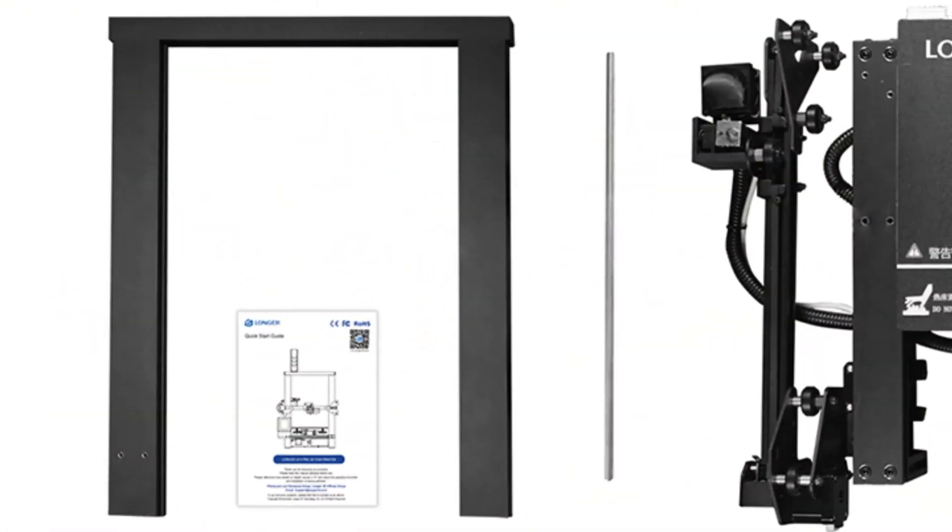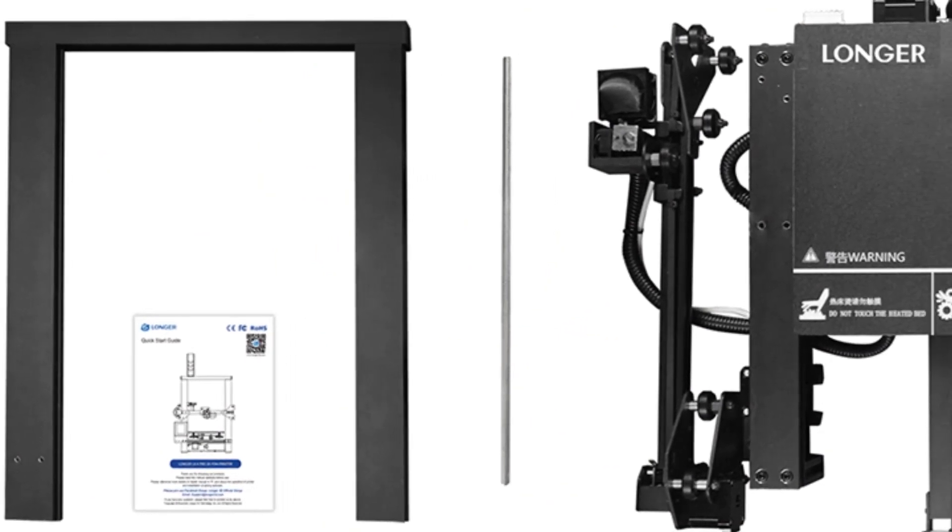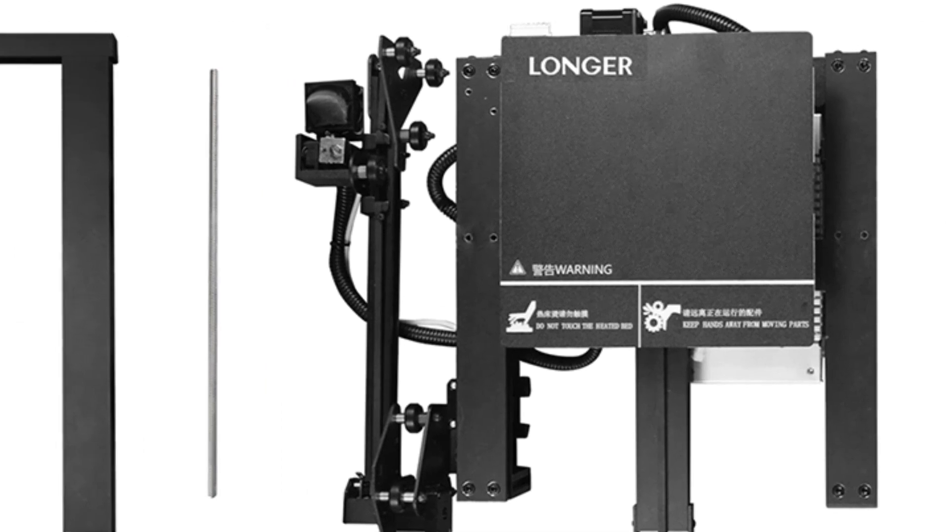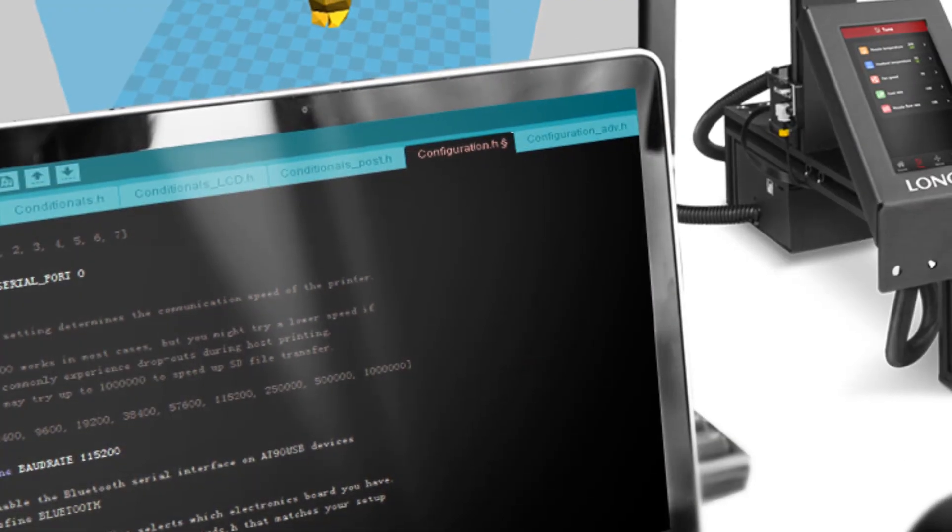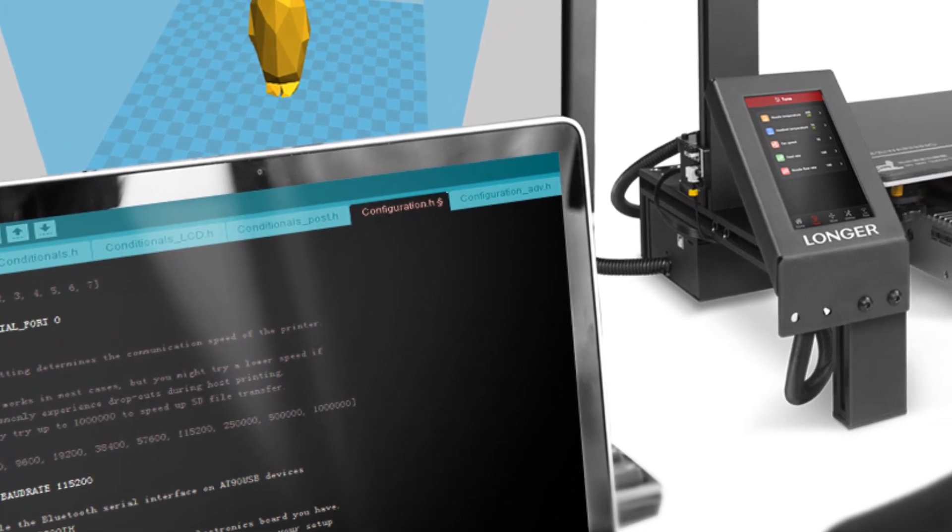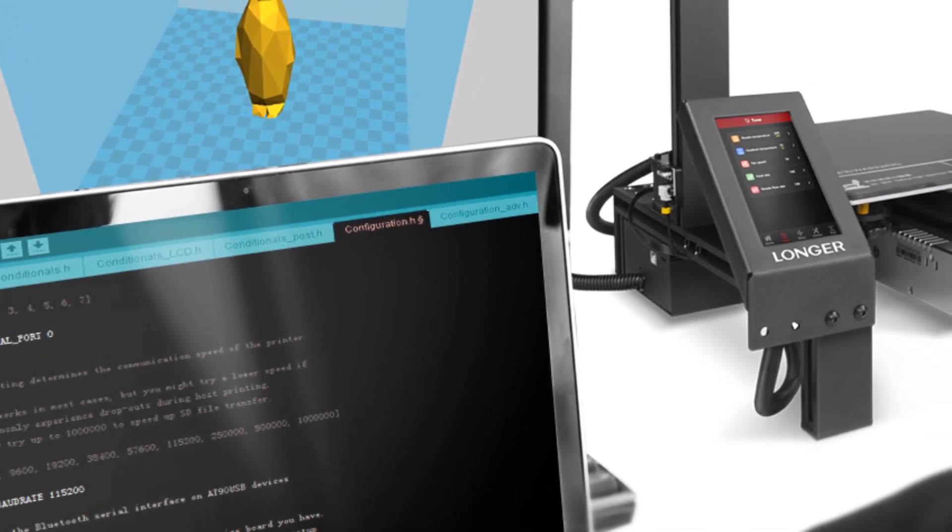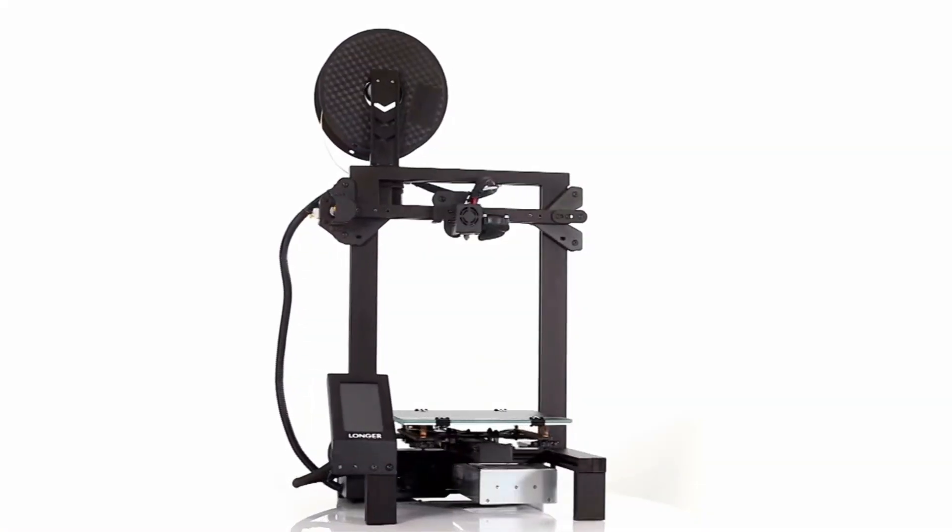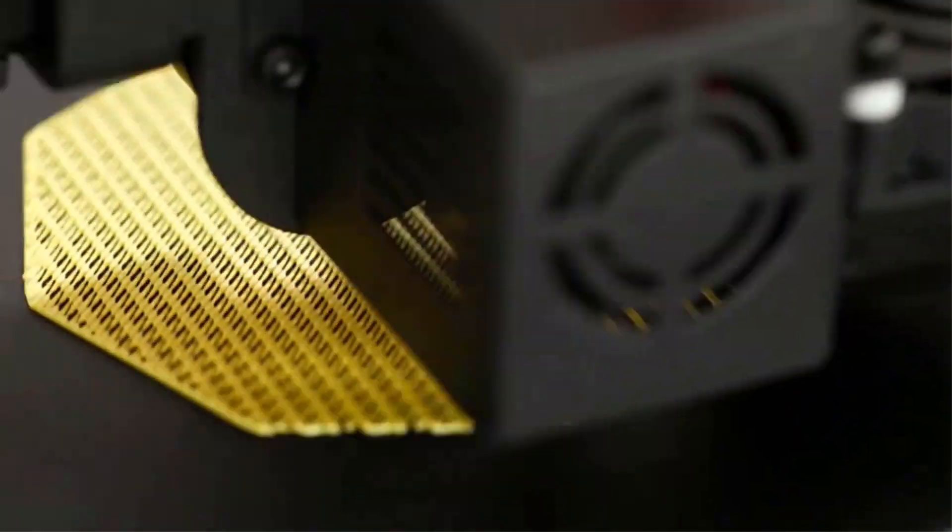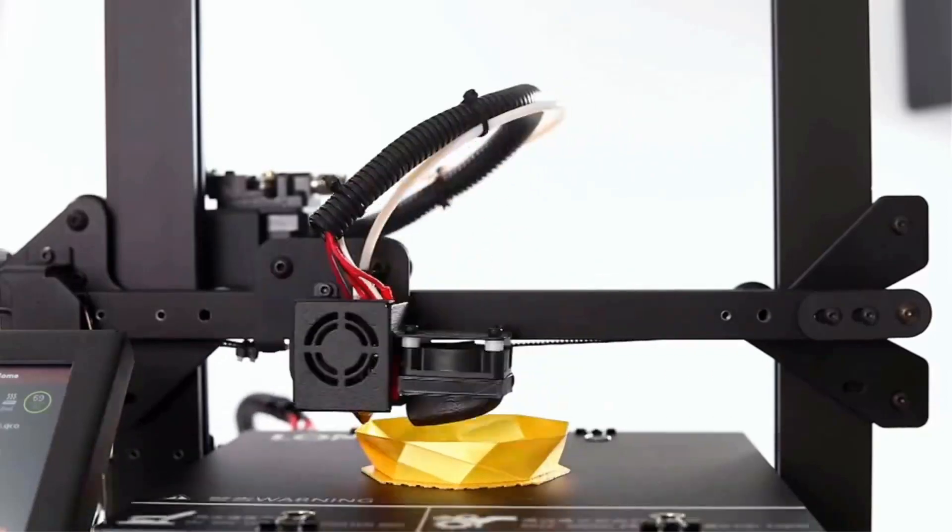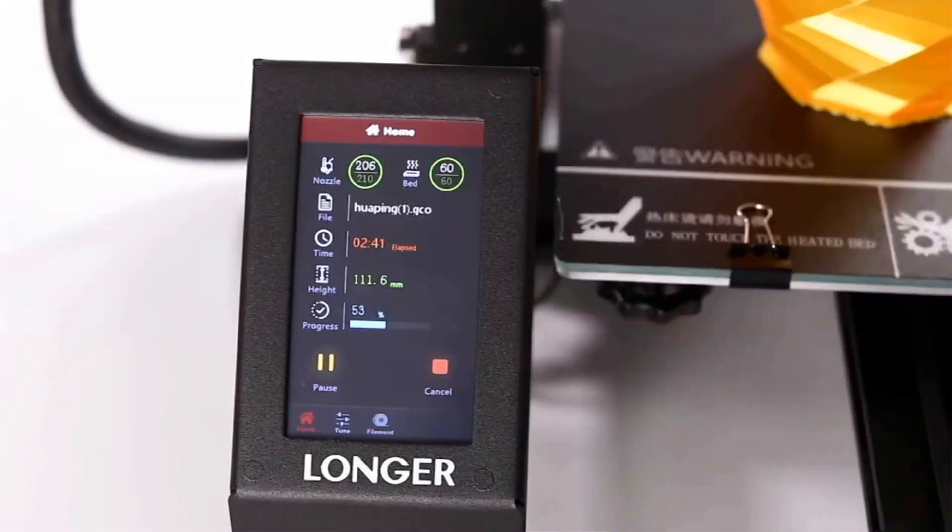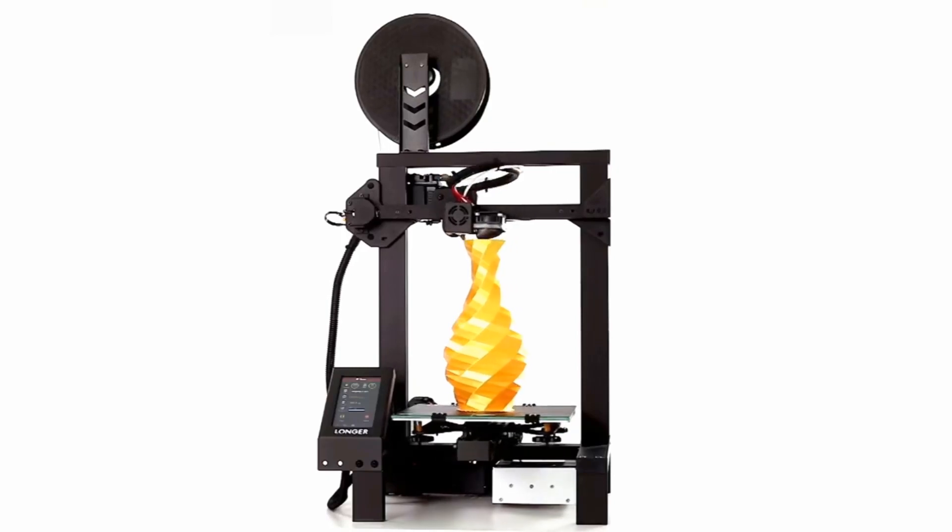It also has open source for further development and more functionality. Longer LK4 Pro has a new user interface design that is very friendly and easy to understand. The hotbed enables fast heating with high power. The upgraded structural design provides stable operation. This is 90% pre-assembled so there will be no difficulty in installation and assembly.